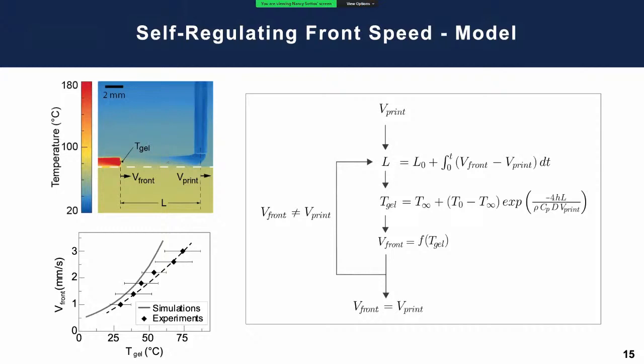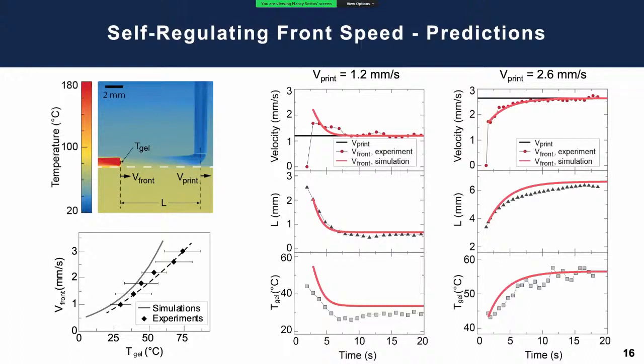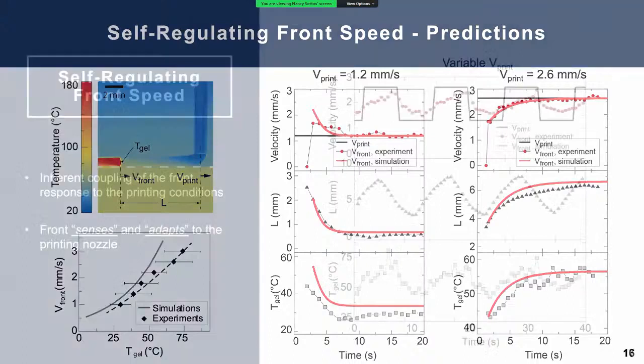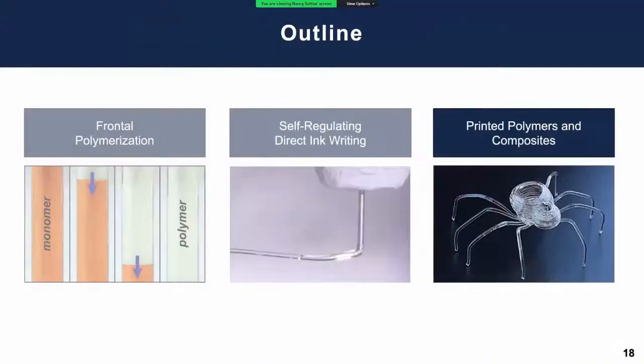Basically, if we control the print speed and initially the front speed and print speed aren't equal, what happens is the print speed sets up a certain length L of uncured material. There's a certain temperature of the gel that depends on all the boundary conditions. This front speed is a function of this temperature of the gel and it goes into this cycle where the front speed will automatically adjust to the print speed within a range of values. Obviously if you go too fast and L gets too large you would have difficulties. Going too slow isn't too problematic. Using this type of model, it's interesting we can actually predict the responses that we measure experimentally, and that predictive tool turns out to be quite useful. You can also see this illustrated in a different way - there's this inherent coupling of the front. If I choose a variable print speed shown in the dark line in the top, you see the front speed that follows behind it. It really does follow it. The front senses and adapts to whatever the printing nozzle is doing, as does the length of the uncured region and the temperature of the gel. We can predict this type of regulating feedback loop response as well.